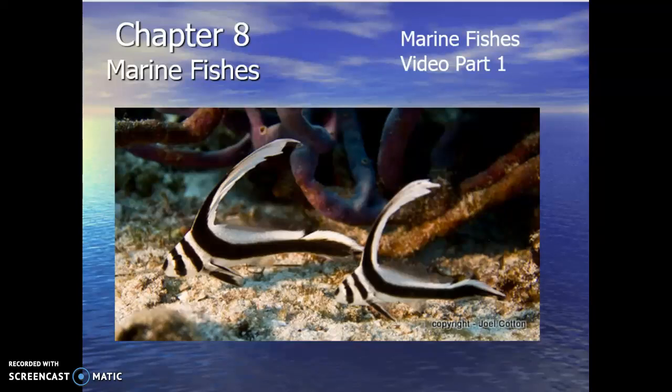Welcome to the chapter on marine fishes. The fish in the picture here are juvenile spotted drums. Like a lot of marine fishes, they will change as they go through different developmental stages of their life. The juveniles have this black and white striped appearance with these big long elongated dorsal fins. As we move into the adult stage, they change their appearance. They're not always going to look the same throughout their entire life.